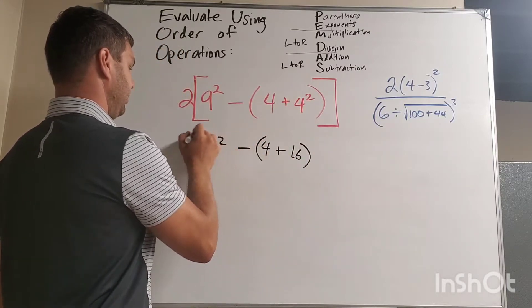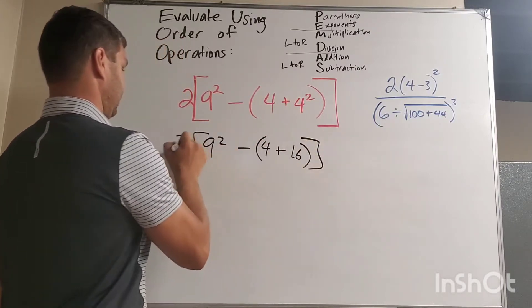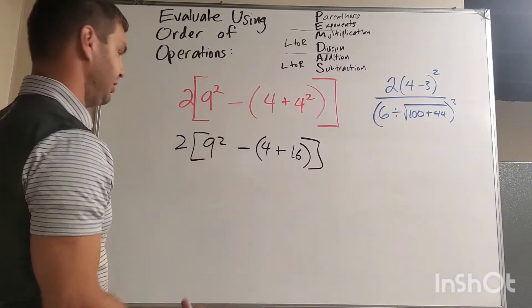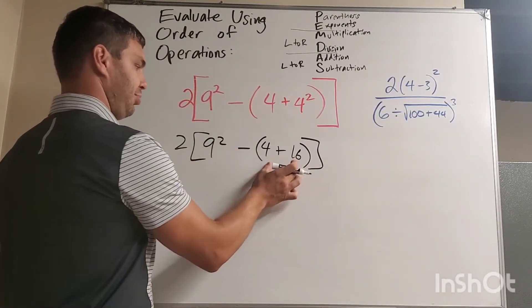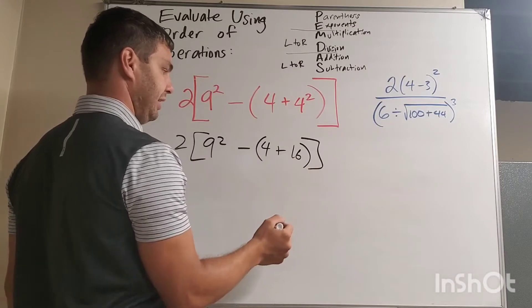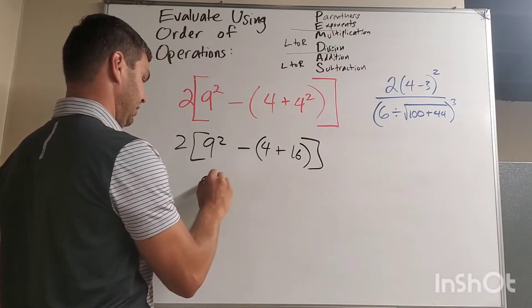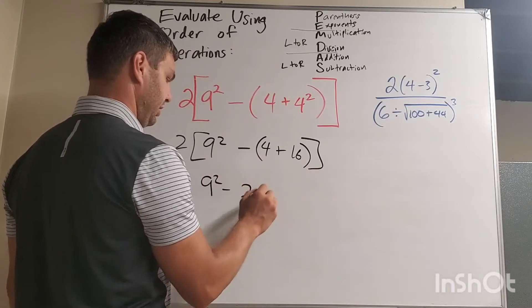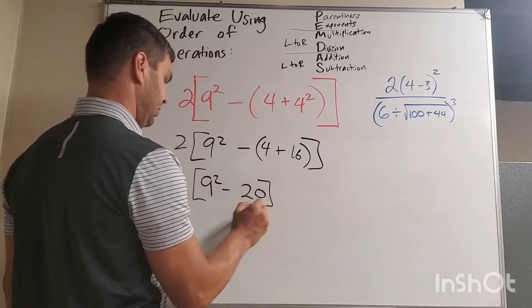Write down the rest. Okay, the longest part of this is just writing down each step, I think. I still have a set of parentheses here, which is 4 plus 16, which is 20. So now it's 9 squared minus 20.